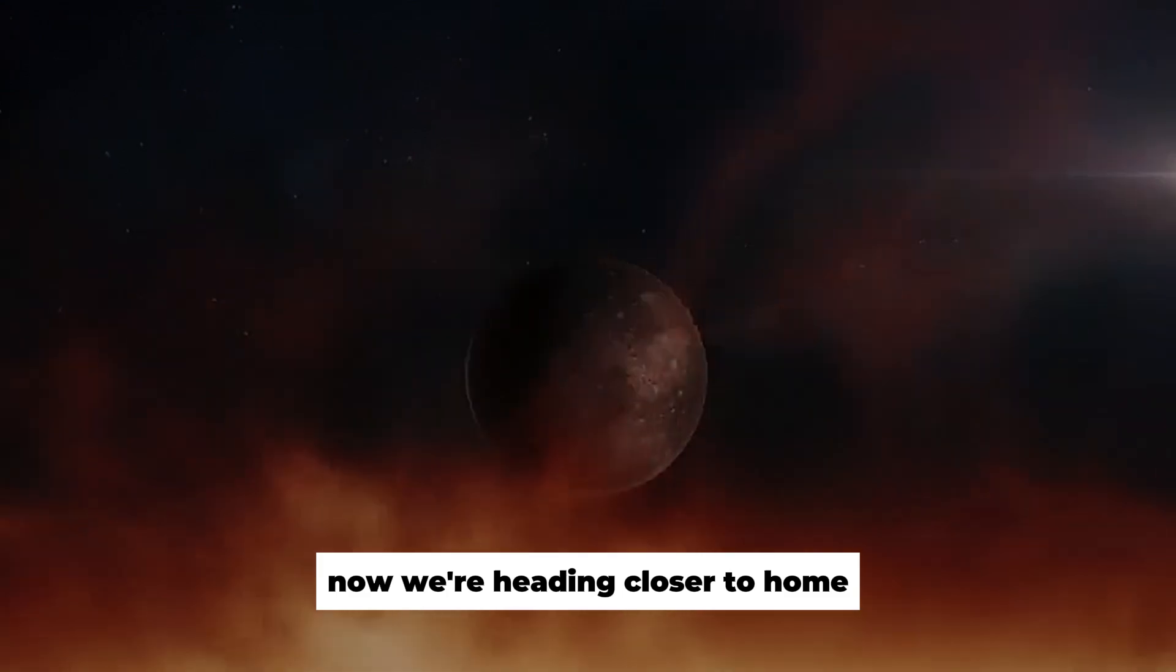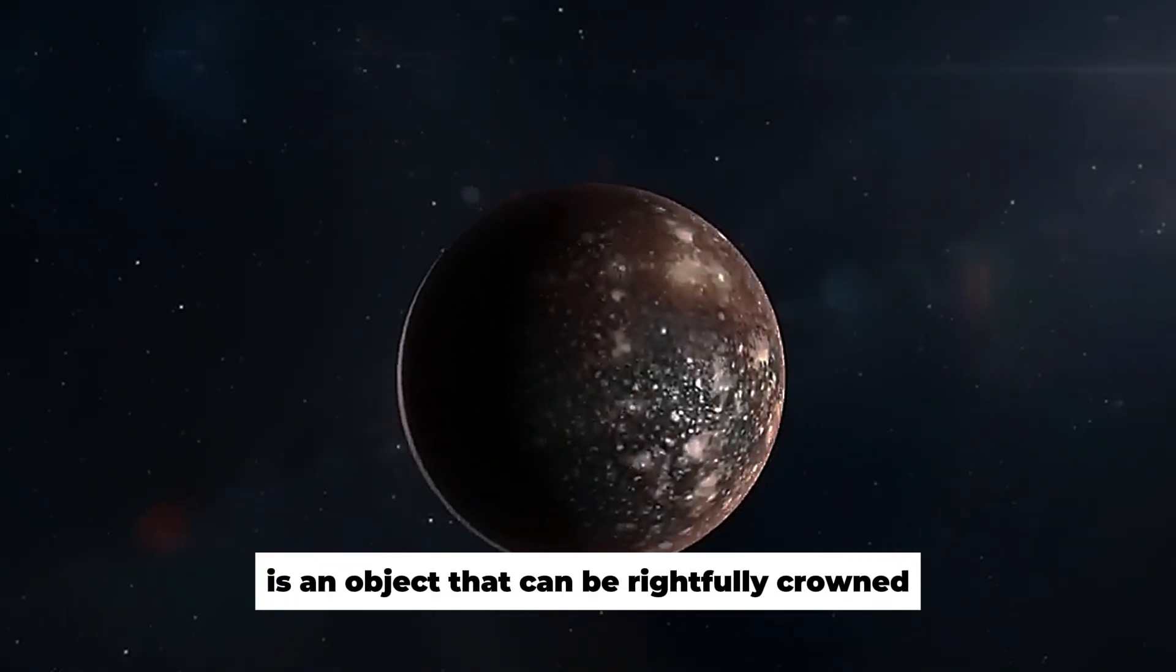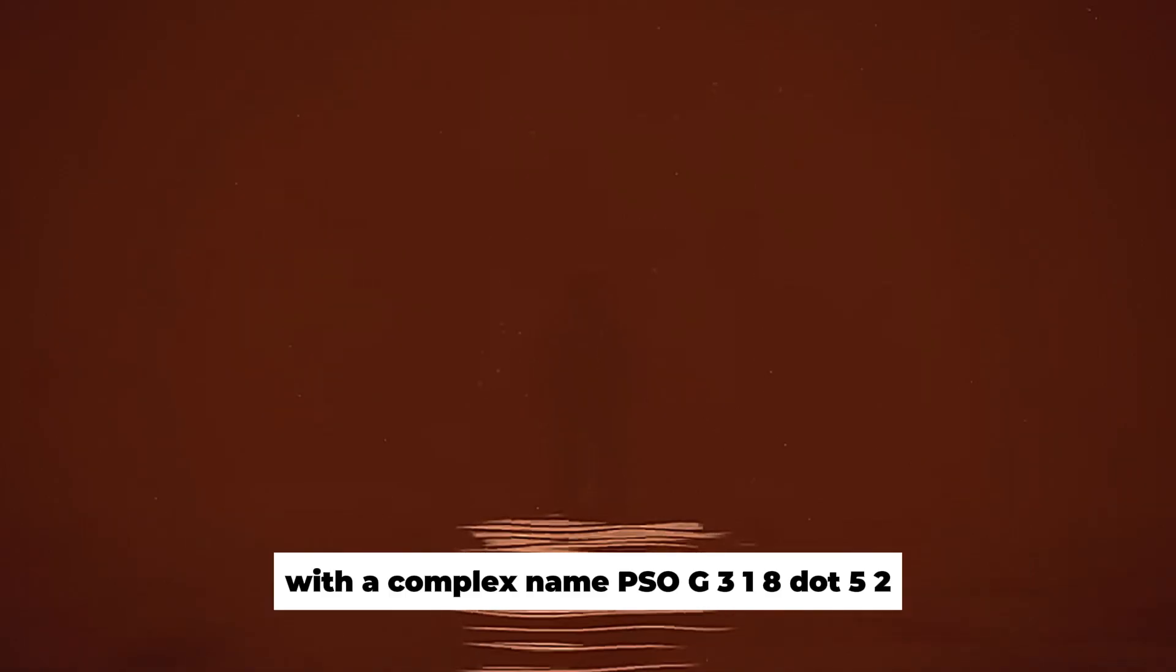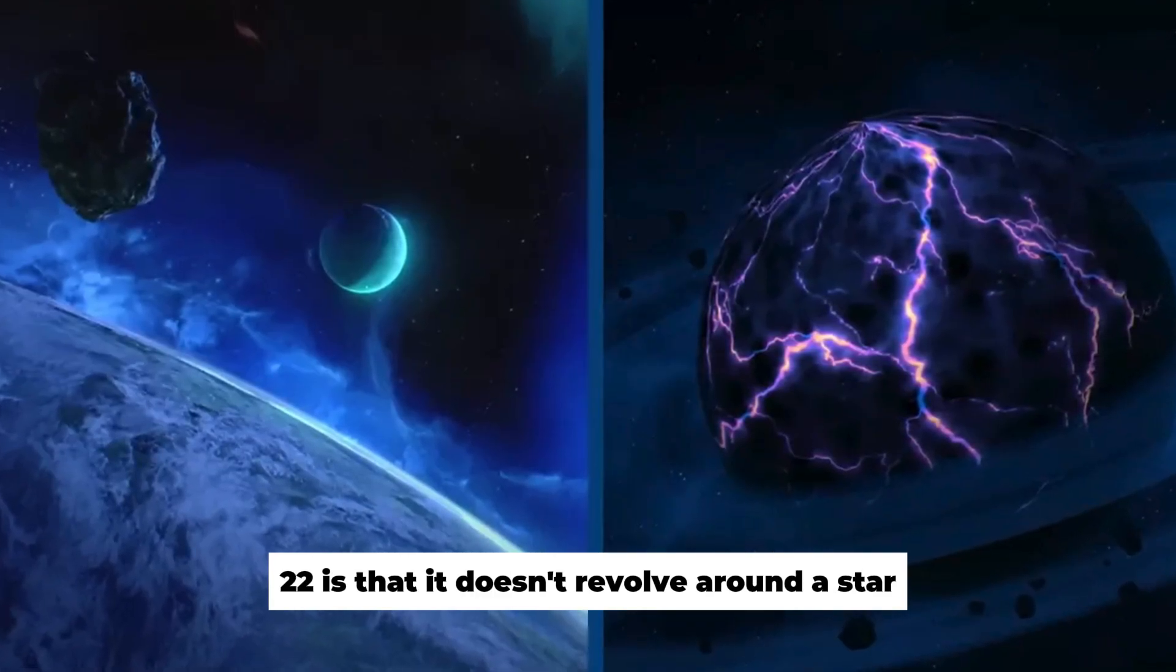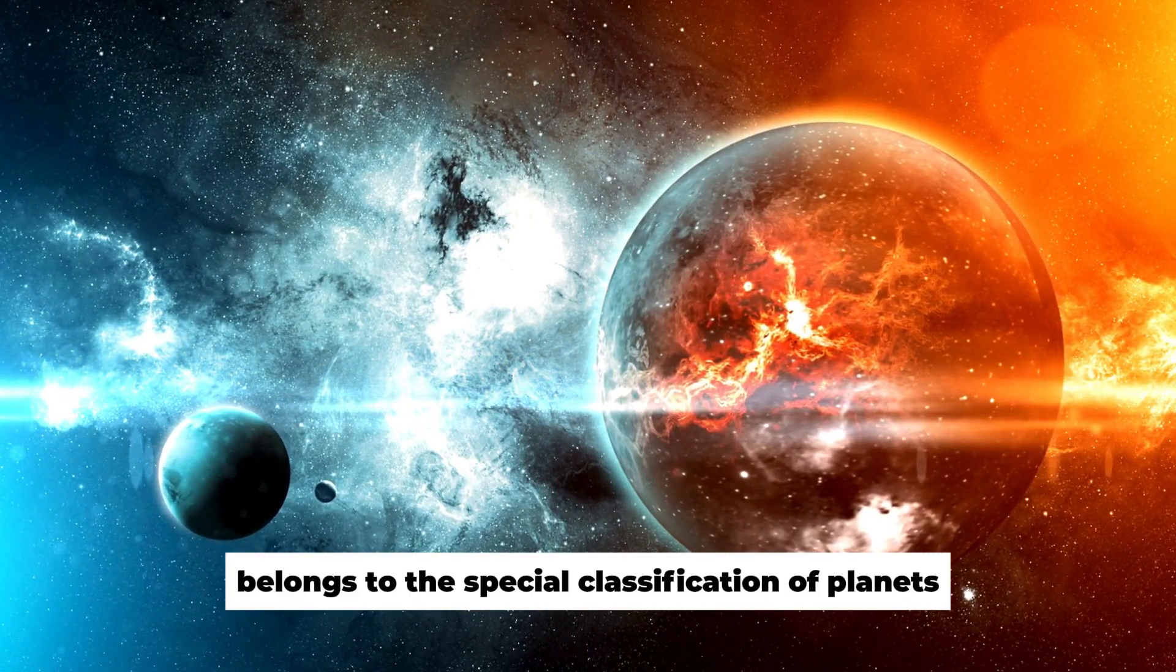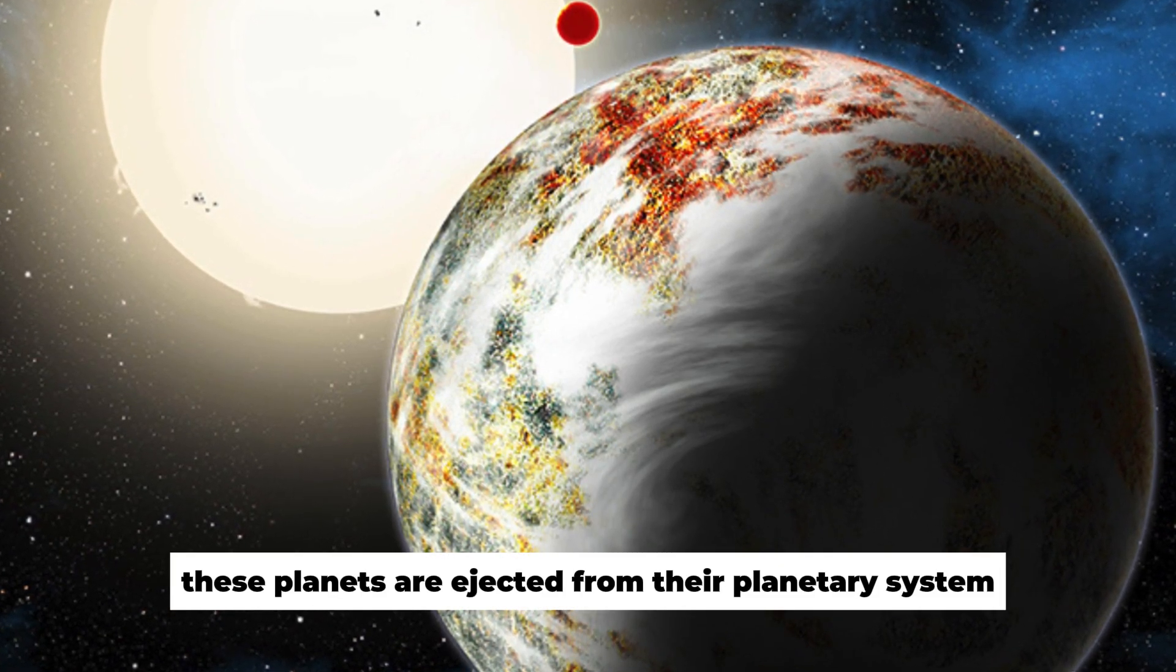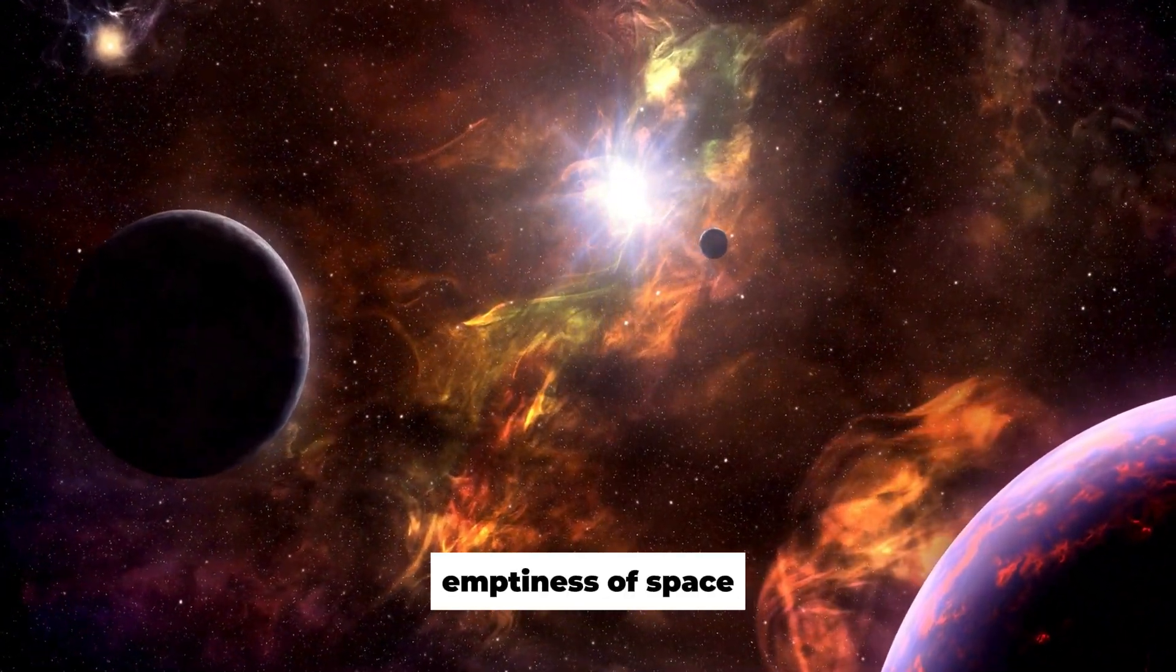Now we're heading closer to home. About 80 light years from the Sun is an object that can be rightfully crowned as one of the loneliest in the universe. The interesting thing about the planet with a complex name, PSOG 318.5-22, is that it doesn't revolve around a star. PSOG 318 belongs to the special classification of planets called rogue planets, sometimes called orphans or nomads. These planets are ejected from their planetary system, and now they just wander through the endless emptiness of space.